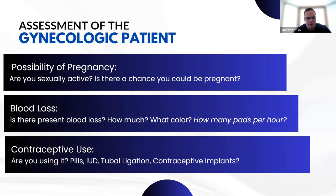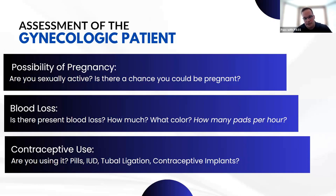Regarding blood loss: is there present blood loss, how much, what color, and how many pads per hour? That last question has always been drilled into us in EMT and paramedic school. My personal opinion is that question has zero merit in estimating blood loss — and we'll look at a video showing why. We also ask about contraceptive use: birth control pills, IUD, tubal ligation, or a contraceptive implant in the bicep of the arm.